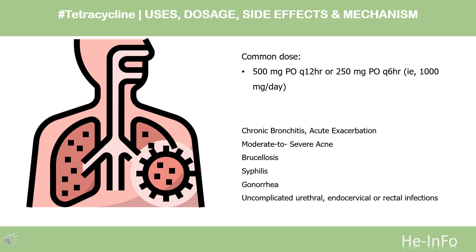Brucellosis: 500 mg PO every 6 hours for 3 weeks, accompanied by streptomycin 1 g IM twice daily for the first week, then once daily the second week. Syphilis — for patients allergic to penicillin: early syphilis (duration less than 1 year), 500 mg PO every 6 hours for 15 days. Syphilis with duration greater than 1 year (except neurosyphilis), 500 mg PO every 6 hours for 30 days.